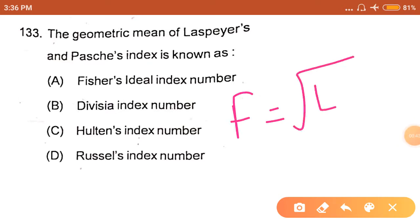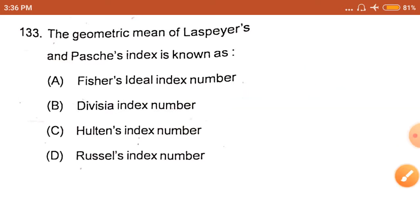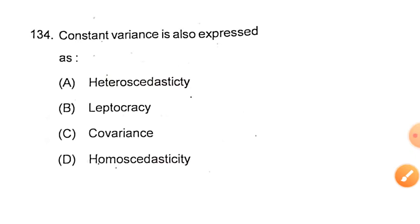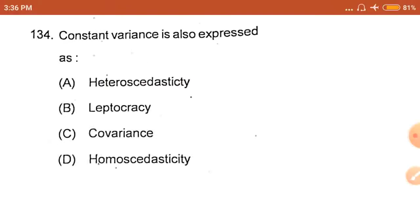The next question is: constant variance is also expressed as... The answer is homoscedasticity, because homoscedasticity means constant variance.